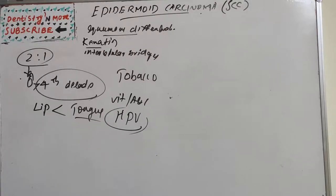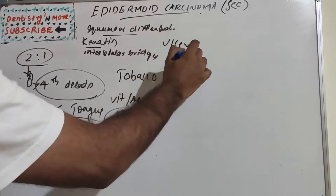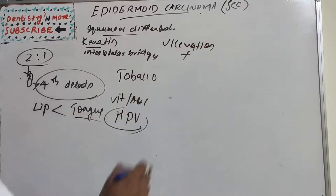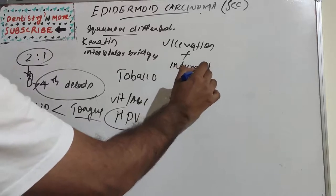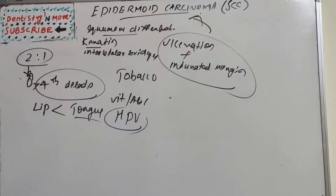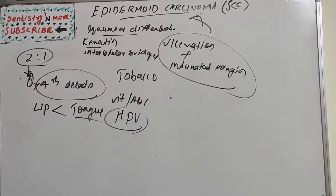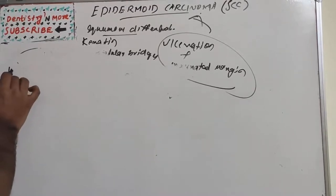Moving on to clinical features, all oral cancers have two very characteristic features: ulceration and an indurated margin. These are the two striking clinical features of squamous cell carcinoma.